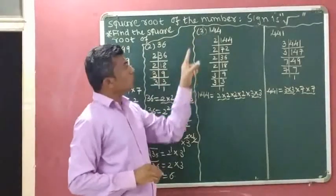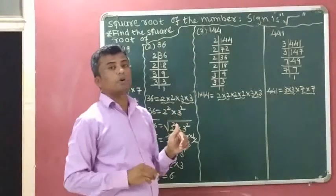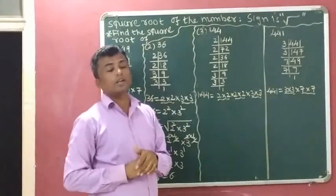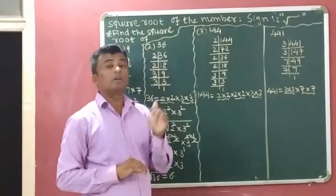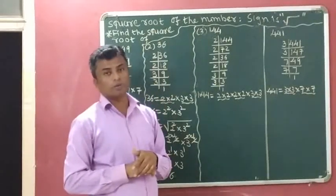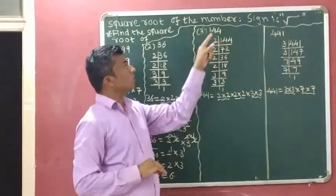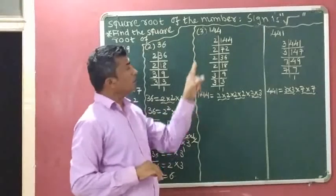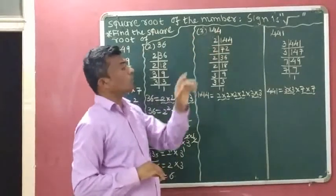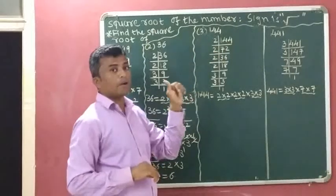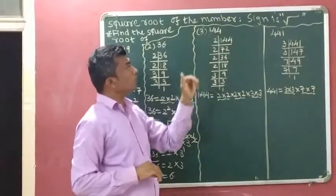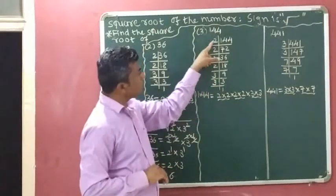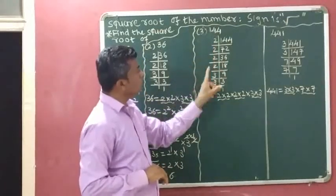Next, we identify the square root of 144. Normal method: which two same digits we can multiply to get 144? 12 times 12 is 144, so the square root of 144 is 12. Now with the regular method, we find the prime factors of 144 by prime factorization. The prime factorization gives us 2 appearing 4 times and 3 appearing 2 times.